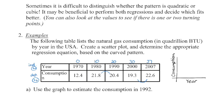Looking at the years, they're increasing over time. You have two options when entering data into your calculator: you can put in 1970, 1980, and so on, or you can set 1970 as year zero, so 1980 is 10 years later and 1990 is 20 years later. That way the numbers generated in the equation of the function aren't going to be so large.